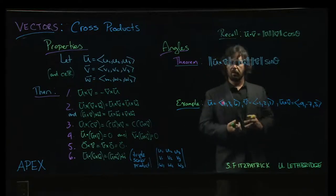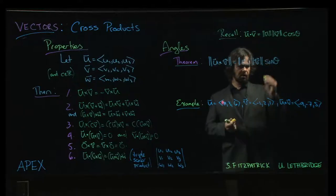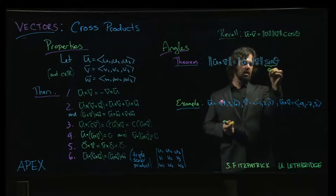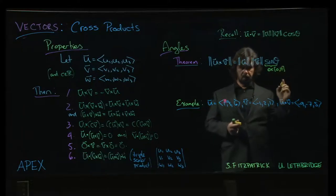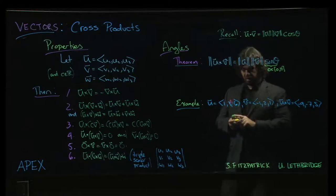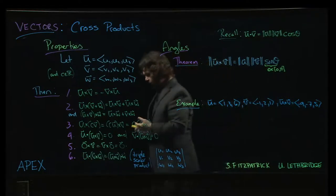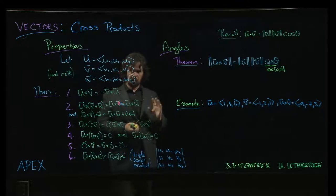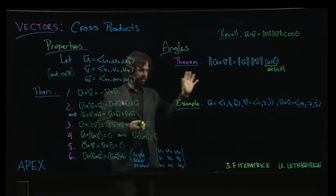One thing you might be worried about is that magnitude needs to be positive and we have a sine function. But remember that theta is between zero and pi. Sine is positive on that interval. So we don't have to worry about the magnitude becoming negative here.